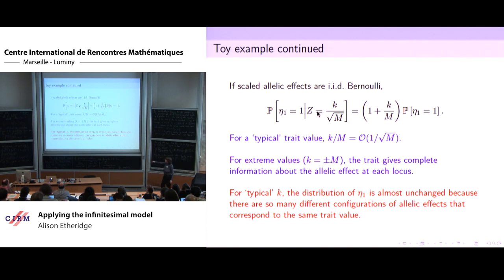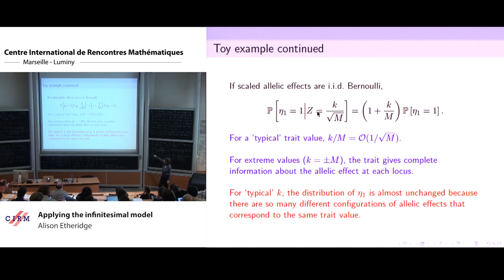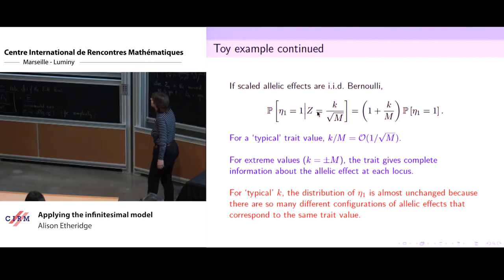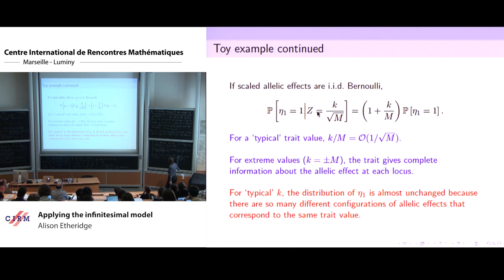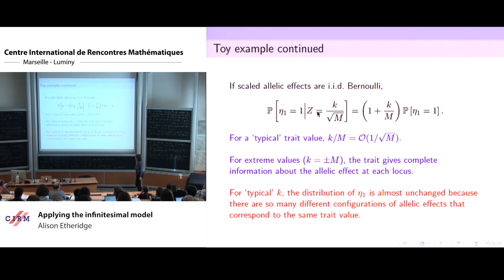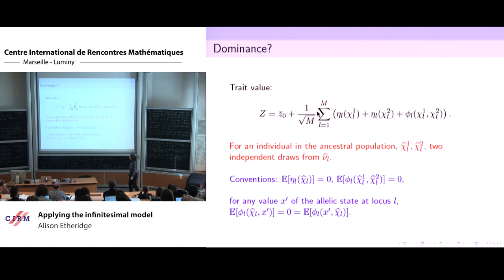You can see that the infinitesimal model — for which the basic assumption is that we're not learning too much about the allelic state at a particular locus by observing the trait — is certainly going to go wrong if I take traits that are too extreme. For typical k, there are so many different ways in which a particular genetic component of the trait value can occur that just by observing the trait value, I'm not telling you anything about a particular allele.